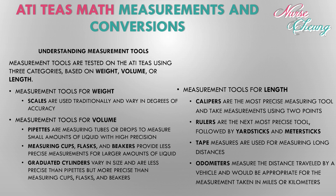The ATITs will test you on your basic knowledge of measurement tools for weight, volume, and length. Scales are used traditionally to measure weight. For volume, pipettes are measuring tubes used for small amounts of liquid with high precision. Measuring cups, flasks, and beakers provide less precise measurements for larger amounts of liquid. Graduated cylinders vary in size and are less precise than pipettes but more precise than measuring cups, flasks, and beakers.